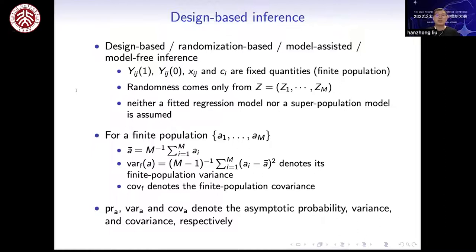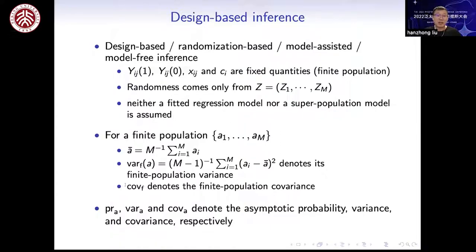We adopt the design-based or randomization-based framework by conditioning on the potential outcomes and covariates, with treatment assignment being the only source of randomness. In the following I will use a few notations. For a finite population of size M, I will use A-bar to denote its finite population mean, VarF to denote its finite population variance, and CovF to denote its finite population covariance.